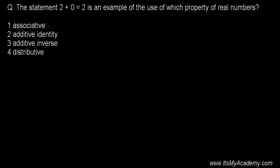Here we're going to deal with the fifth question in integrated algebra based on finding the property. The question is: the statement 2 + 0 = 2 is an example of the use of which property of real numbers? One: associative, two: additive identity, three: additive inverse, or four: distributive.